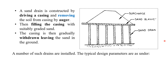Above the sand drains, a layer of sand blanket (also called granular blanket) is provided, and above that the surcharge fill is placed. Once the sand drains are constructed, the surcharge causes pressure in the downward direction. Water in the soft soil moves horizontally, takes the path of the sand drains and moves vertically. The sand blanket provides horizontal drainage so the water is discharged out.